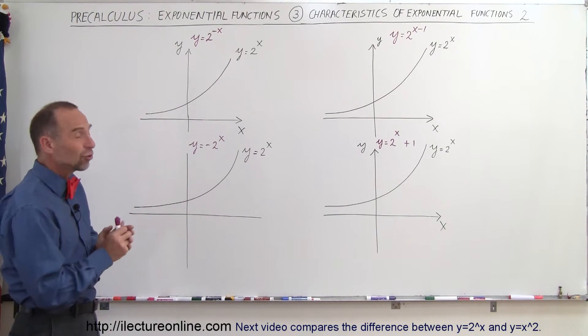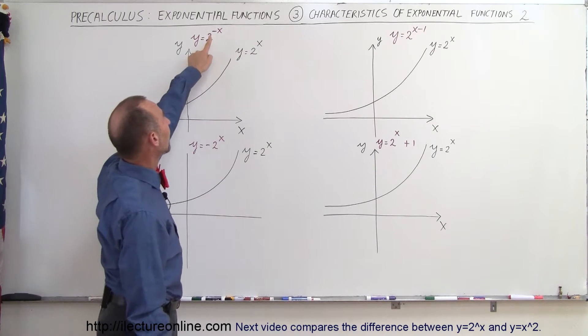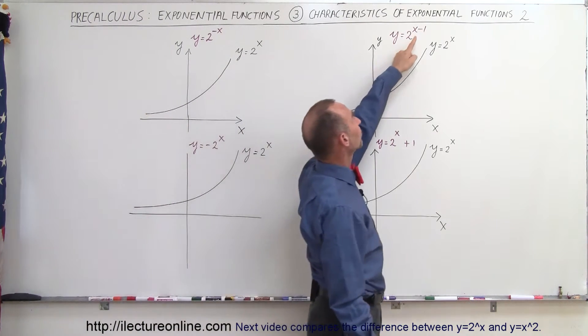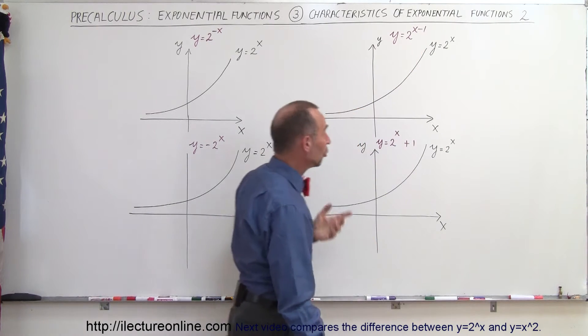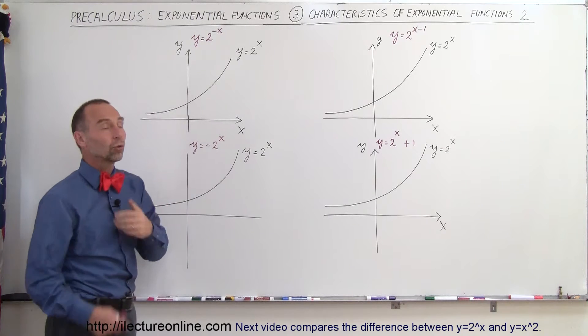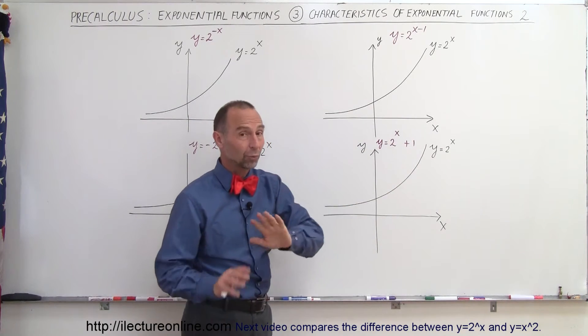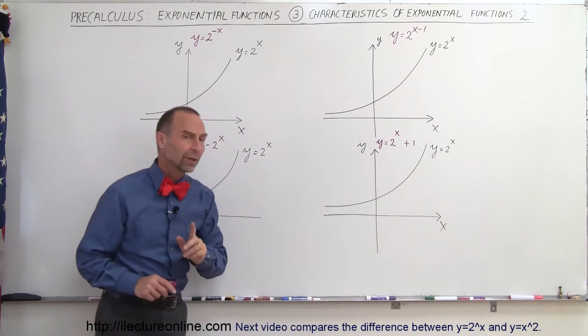But how does the graph of that function change when we write y equals 2 to the minus x instead, or y equals 2 to the x minus 1 in the exponent, or what happens when we write y equals minus 2 to the x, or y equals 2 to the x plus 1 where the plus 1 is not in the exponent? Well let's take a look.